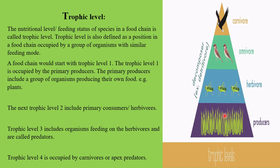Trophic level one is at the base because the whole system starts with the producers, who trap solar energy. The nutritional mode of a species — how they consume food — determines their trophic level. If they produce their own food, they are placed in the producer category at trophic level one. After that, the next category based on feeding status includes herbivores and primary consumers, which directly feed on the producers.